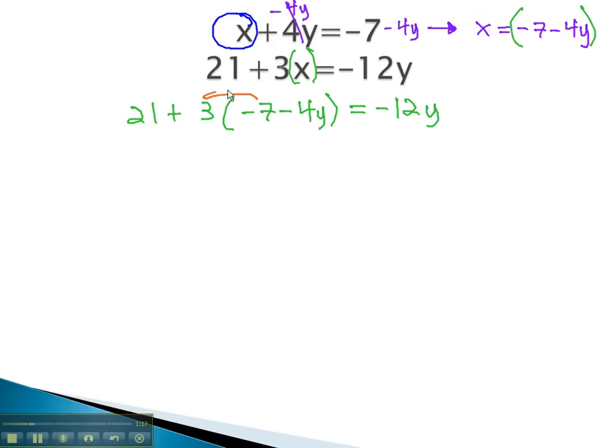We start by distributing through the parentheses. 21 minus 21, minus 12y, is equal to negative 12y. Combining like terms, we end up with simply negative 12y equals negative 12y.